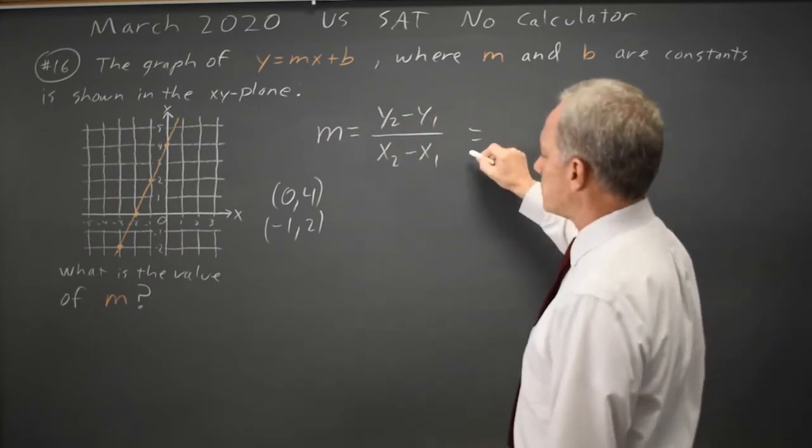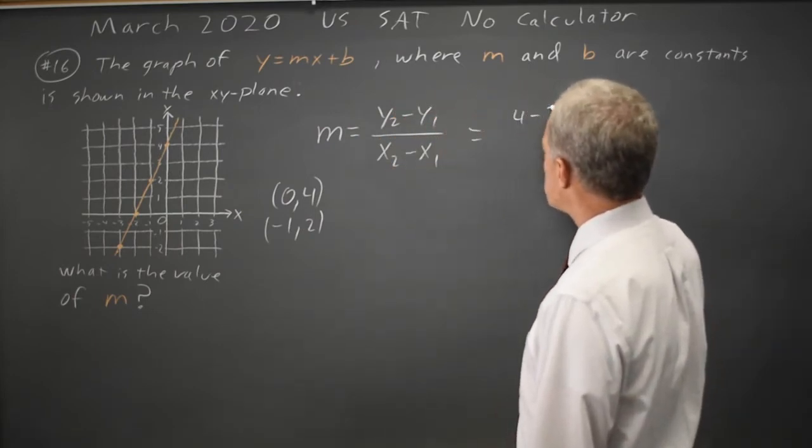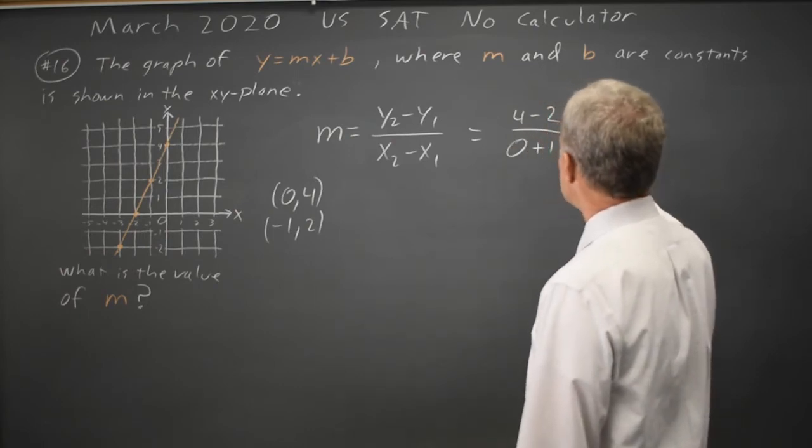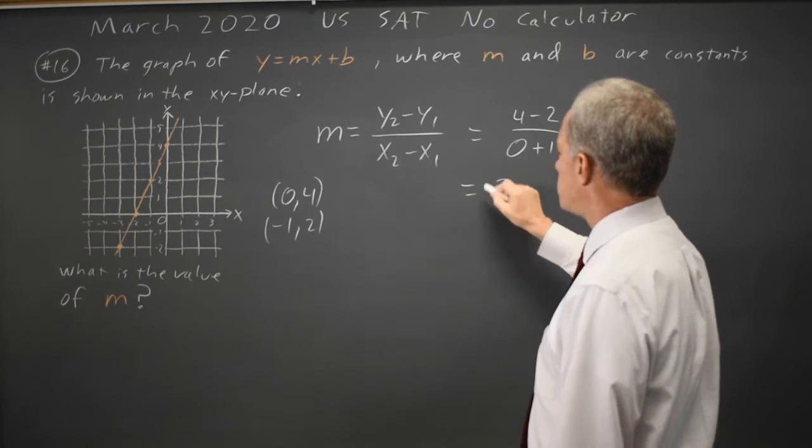My slope is the difference in y's, 4 minus 2, over the difference in x's, 0 minus negative 1, which is 2 over 1, the slope is 2.